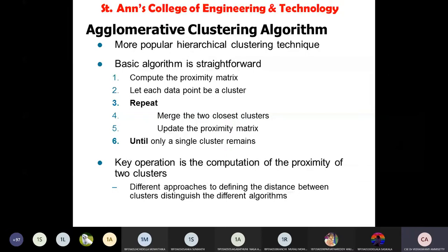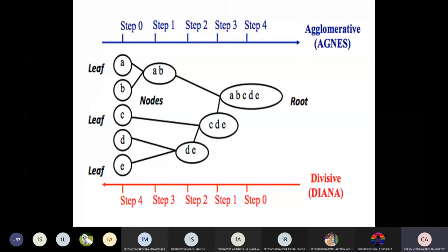Agglomerative clustering is based on the Euclidean distance formula. To calculate the distance between two points, we use: d = √((x2 - x1)² + (y2 - y1)²). This is the basic distance formula used in agglomerative clustering.